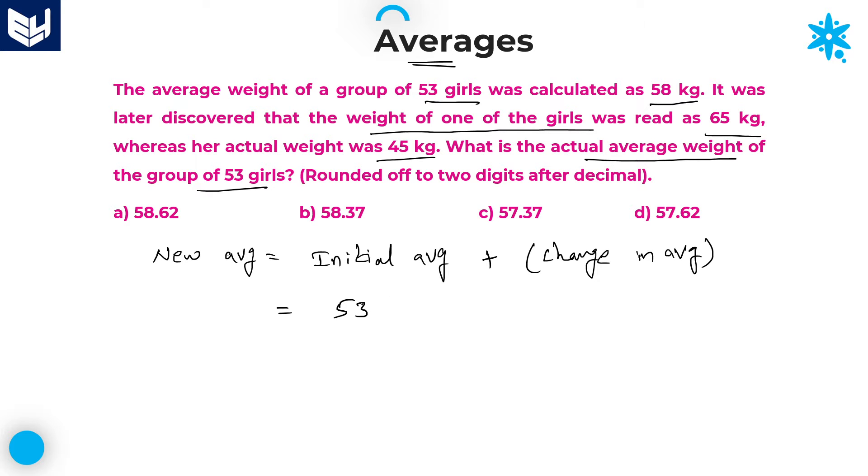Initial average is 58 for 53 girls. Now I am going to calculate that change in average, which is the exact value of that particular girl. Correct value will be signed with positive and wrong value with negative. The wrong number is 65 kg instead of 45 kg. Actual weight is 45, so I am using positive sign for actual weight and negative sign for wrong weight. This is a change in value. If I want the average, I have to divide this entire value to all 53 girls equally.